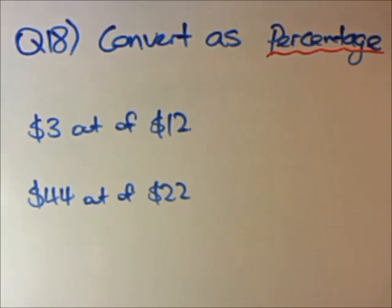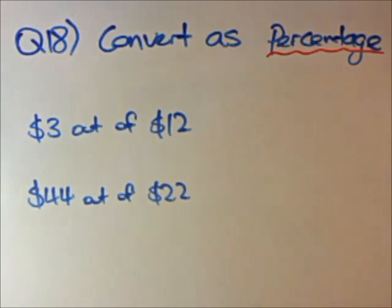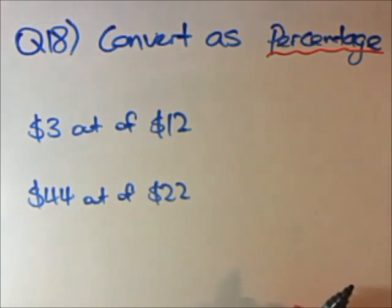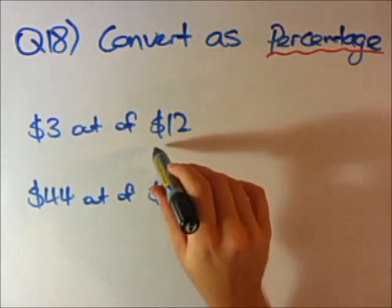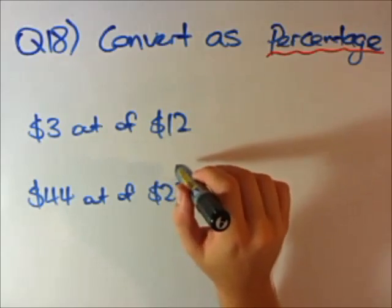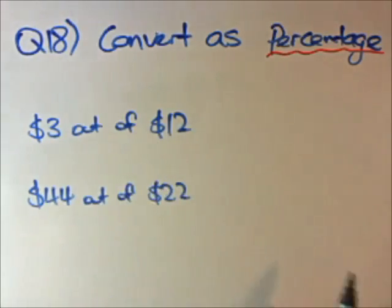We want to convert these prices as a percentage. For example, my brother might earn $12 and I earn $3 — I want to know what percentage of my brother's earnings I earn. So we want to convert $3 out of $12 as a percentage. My brother and I earn a total of $12, but I only earn $3, so I want to see what percent of the total I earn.